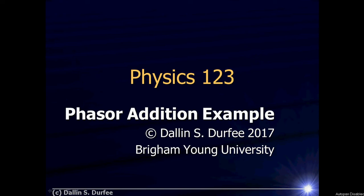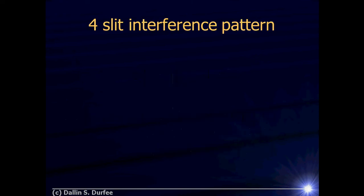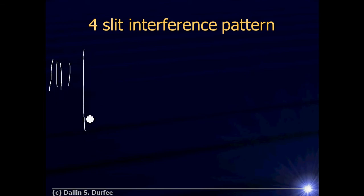Here's an example problem using phasor addition. What we're going to do is figure out what a four-slit interference pattern would look like. I have a plane wave that hits some foil where I have four slits, and we're going to assume that they're evenly spaced by a distance d.